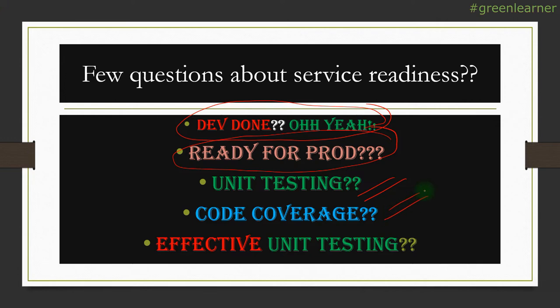Unit testing is very important, and when you are done with the unit testing, code coverage comes into picture. Code coverage is the thing that measures your unit tests — how many lines and how many conditions have you covered and how many you have missed. When you have done unit testing and measured the code coverage, you need to verify that the testing and coverage you are doing is correct — that is what we call effective unit testing. Let me explain these things step by step.